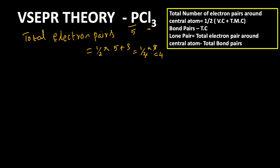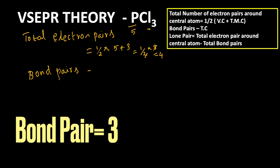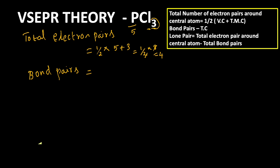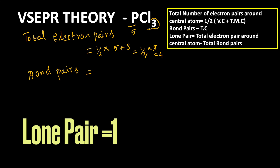Now we can find the bond pair. Bond pair is equal to the total atoms attached to the central atom. Here there are 3 chlorine atoms attached, so bond pair is 3. Using the formula, lone pair = total electron pairs around the central atom minus total bond pairs. We already got total electron pairs = 4 and bond pair = 3. So, 4 − 3 = 1 lone pair in the PCl3 molecule.